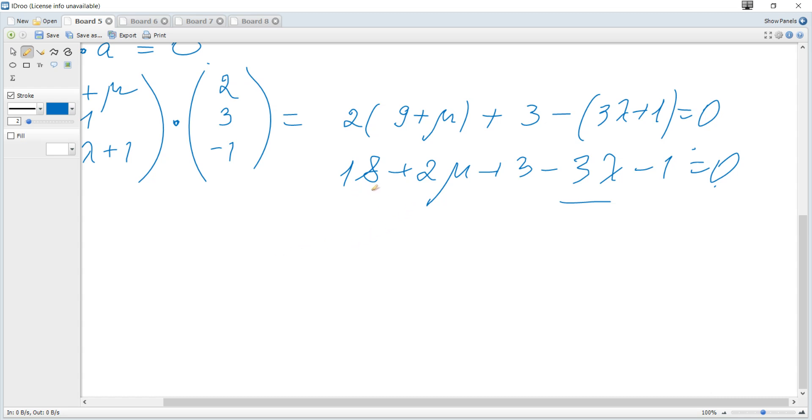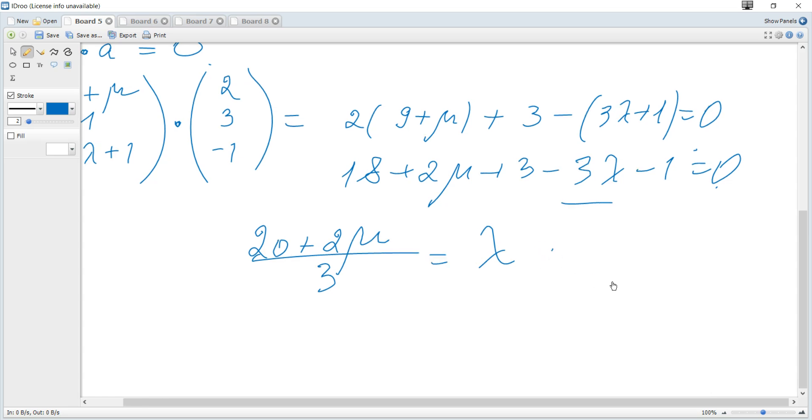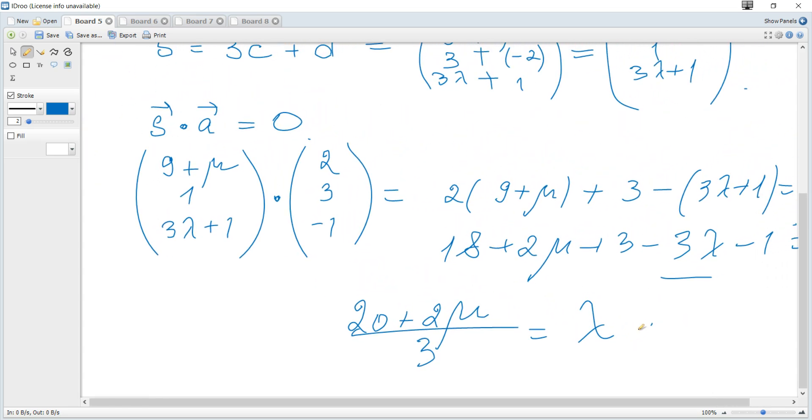You can see it's 3 minus 1, 2, so it's 20. 20 plus 2 mu is 3 lambda, so lambda is just 20 plus 2 mu divided by 3. And that's all for this question.